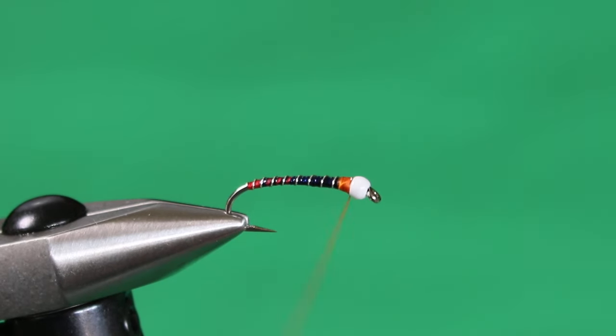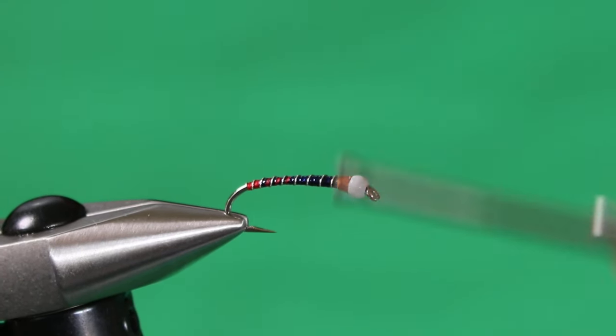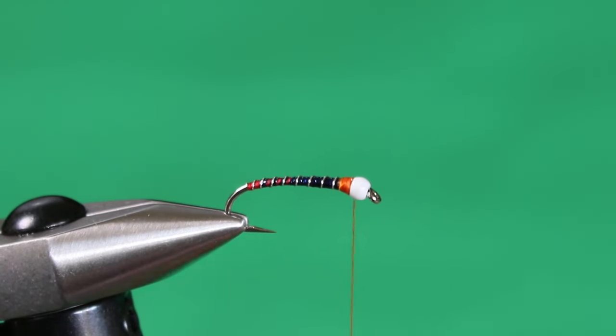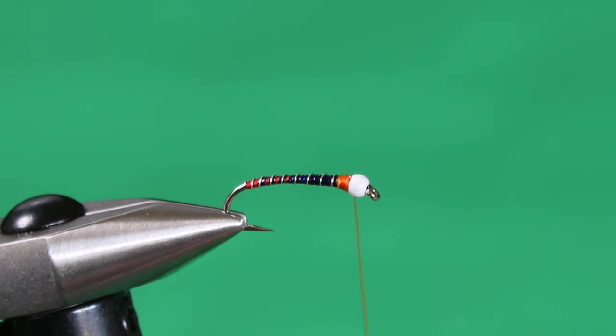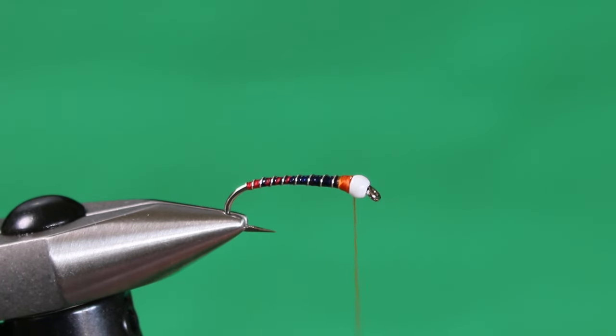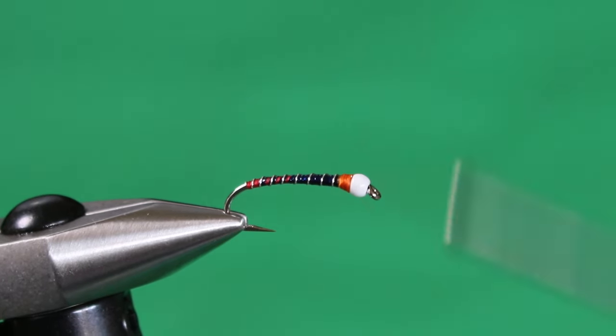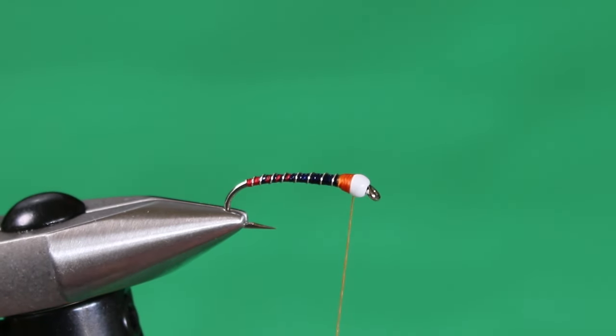Now all it's left to do is build up our thread collar or thorax. Standard proportions for a thread collar, at least for me, on chironomids is they don't extend any further back than the length of that bead. Be nice and subtle, nice gentle slope on this so when you go to whip finish, the thread wraps are not going to tumble back down a steep slope.